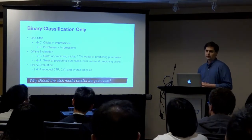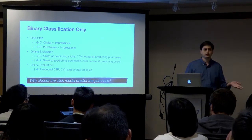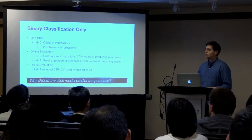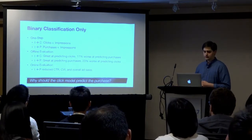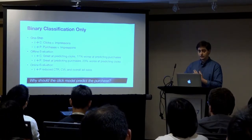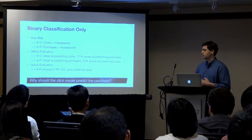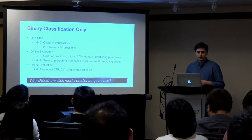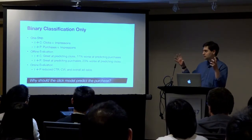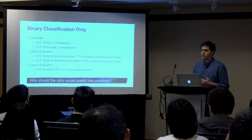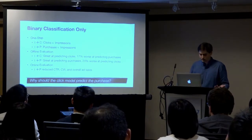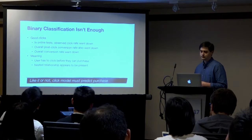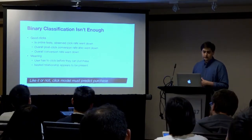Maybe predicting purchases is the right thing to do — after all, a lot of clicks don't lead to purchases, so we should ignore them. Maybe they're bad clicks. So we ran it in an A/B test, and it turned out all the metrics went down, which is generally a bad thing. So maybe something funky is going on. We started to ask: why should we worry about our click score trying to predict purchases? And we thought, maybe binary classification isn't really the best idea here.